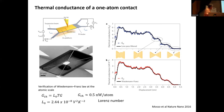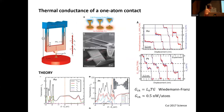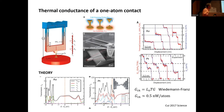Another experiment from Pramod Reddy's group in Michigan used a tip with integrated heaters — even more complicated to build. They measured electrical and thermal conductance simultaneously for gold and platinum, confirming that the thermal conductance follows the electrical conductance with the proportionality of the Wiedemann-Franz law: thermal conductance equals the Lorentz number times temperature times electrical conductance. This same group also measured a single molecule, finding thermal conductance values from 20 to 30 picowatts per kelvin per molecule, including contributions from both electron and phonon thermal transport.